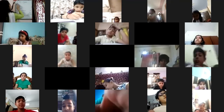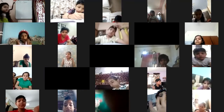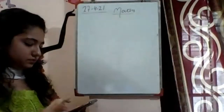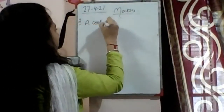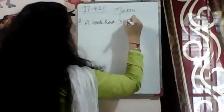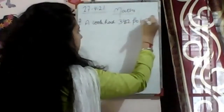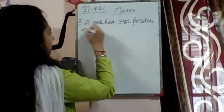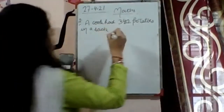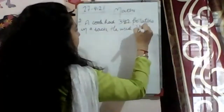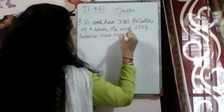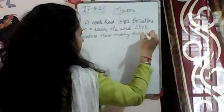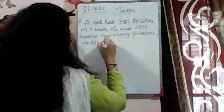Second sum: A cook had 3,452 potatoes in a sack. He used 2,345 potatoes. How many potatoes are left in the sack? First of all, tell me — what does 'sack' mean? Sack means a bag. And cook means someone who cooks food. The cook had 3,452 potatoes and used 2,345. How many are left?